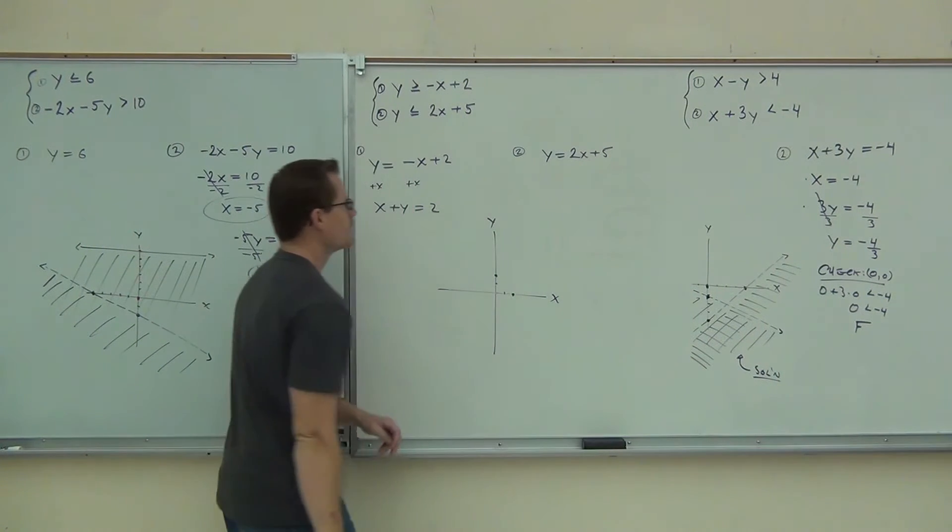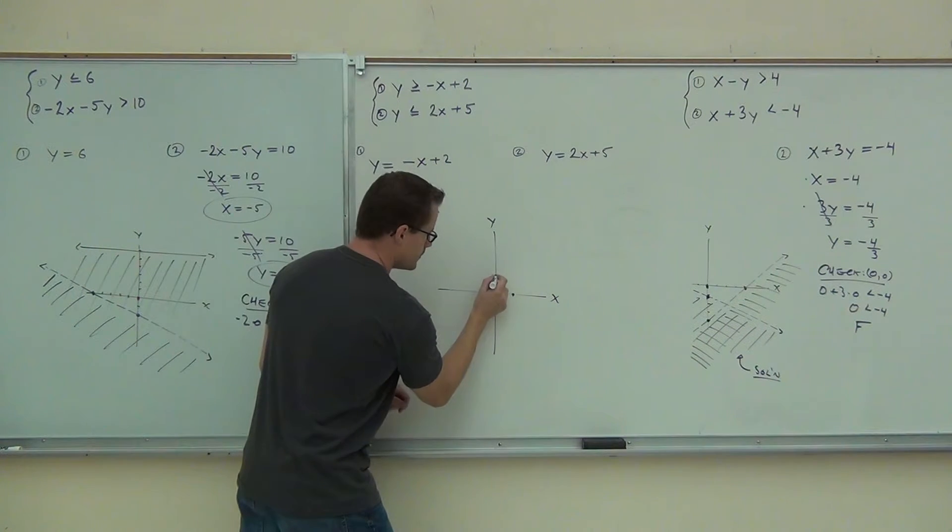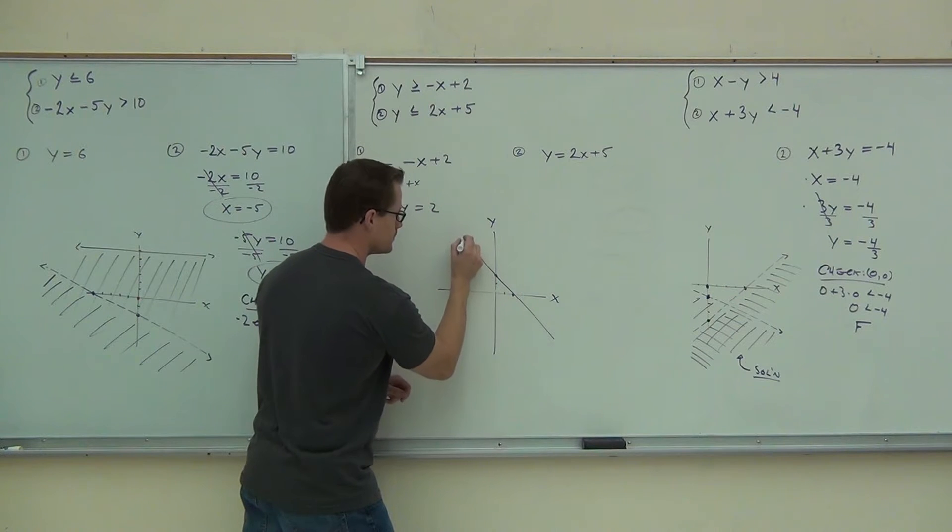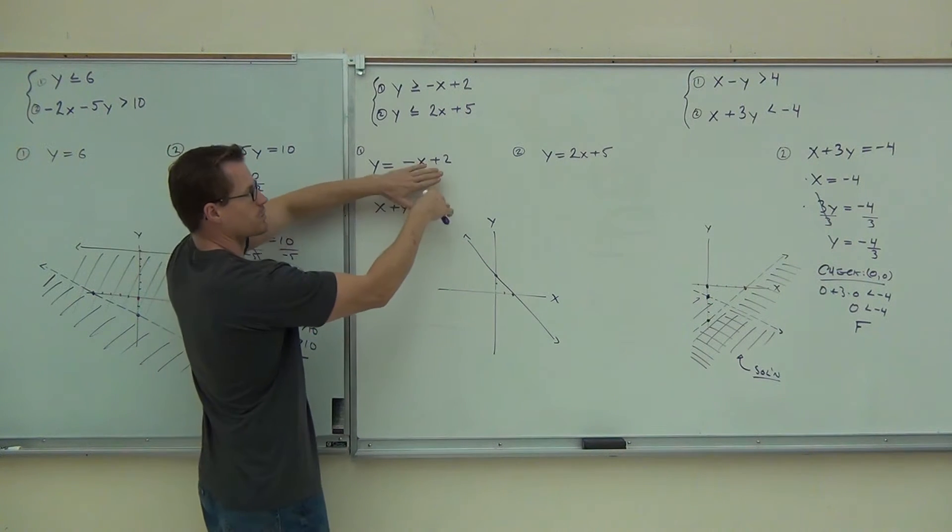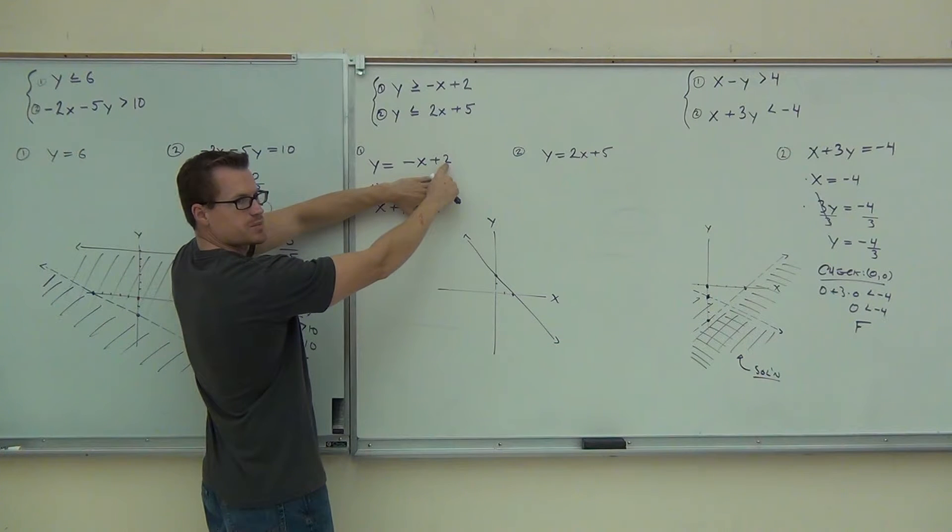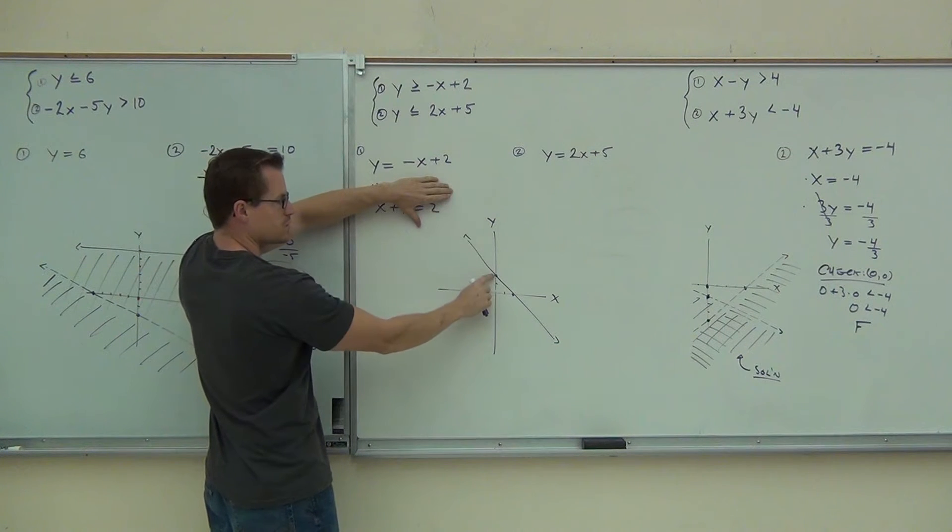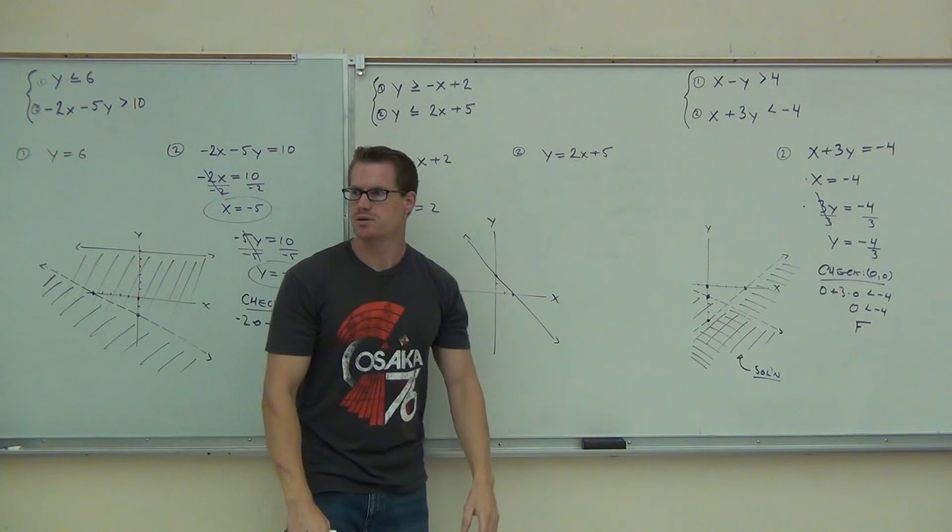Those two points, right? However, if you graph it using slope-intercept, ignore this part for a second. Slope-intercept says that this intercept is two, right there. You go down one, over one. Down one, over one. Do you see that you get the same points? Same exact line there.